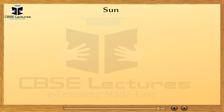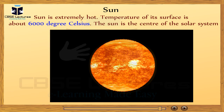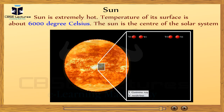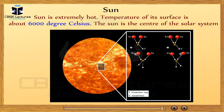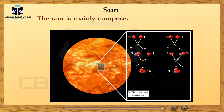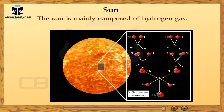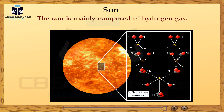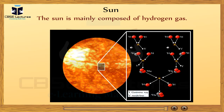Do you know how hot the sun is? The sun is extremely hot — the temperature of its surface is above 6,000 degrees Celsius. The sun is at the center of the solar system and is a huge store of heat and light energy. The sun is mainly composed of hydrogen gas. The hydrogen gas in the sun keeps on changing to helium gas, and this process releases a huge amount of energy — like thousands of atom bombs working together.